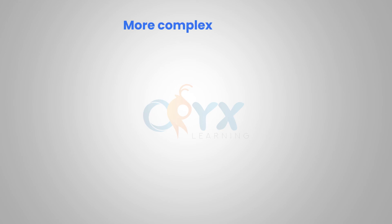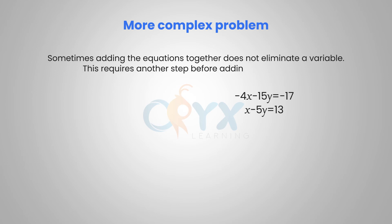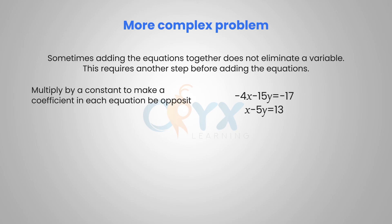Let's look at a more complex problem. Sometimes adding the equations together does not eliminate a variable, which requires an additional step before adding. We can multiply by a constant to create coefficients in each equation that are opposite values. In this case, we can choose to multiply by either 4 or by negative 3.